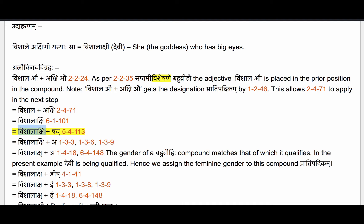We now apply the affix Shach following this Bahubrihi compound using Sutram 54113, because we have a Bahubrihi compound ending in the term Akshi, which denotes a limb of one's body. So the conditions for applying 54113 are satisfied. The Samasanta pratyaya Shach is brought in. The ending letter Cha gets it samjna by 1.3.3 Halantyam; the beginning letter Sha is also it by 1.3.6 Shaf pratyaya yasya. Both take Lopaha by 1.3.9 Tasya lopaha. So now we have Vishala Akhi + a. The anga Vishala Akhi gets the Bha samjna by 1.4.18 Yachibham, and we apply 6.4.148 Yasyati cha to elide the ending 'i' of the anga Vishala Akhi. So we get Vishalakhi + a = Vishalakhi.